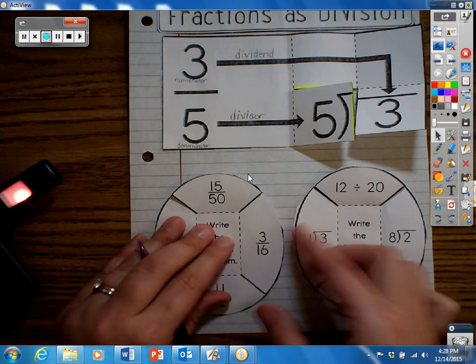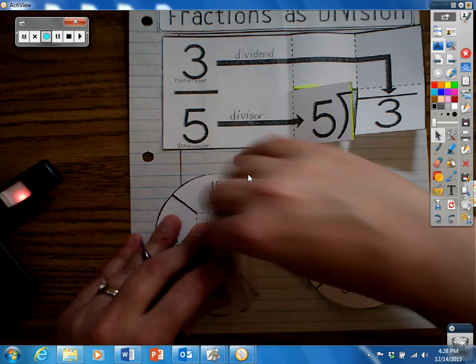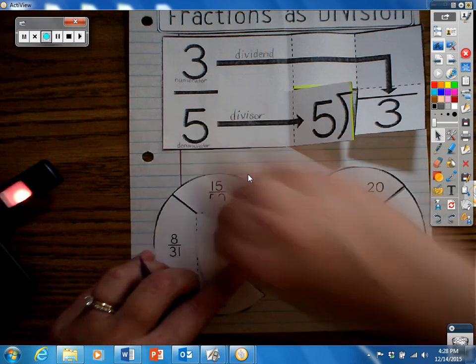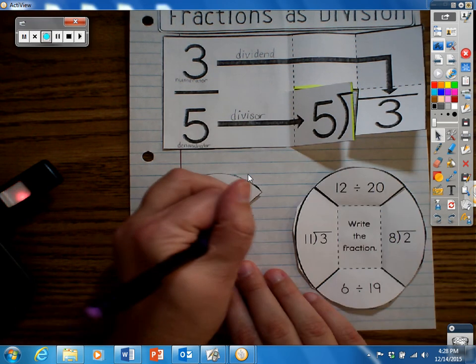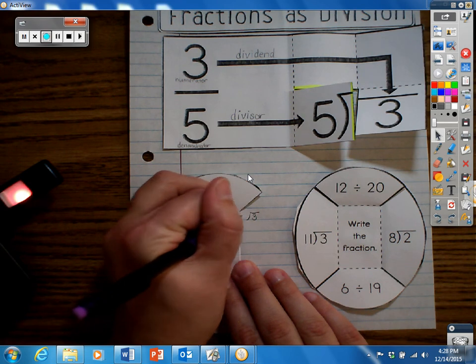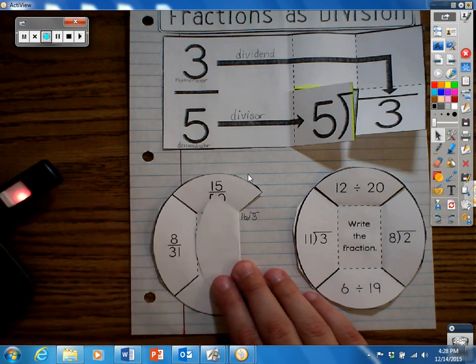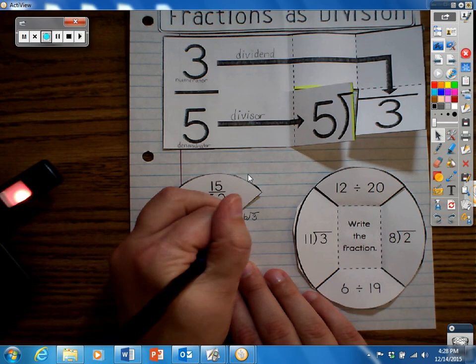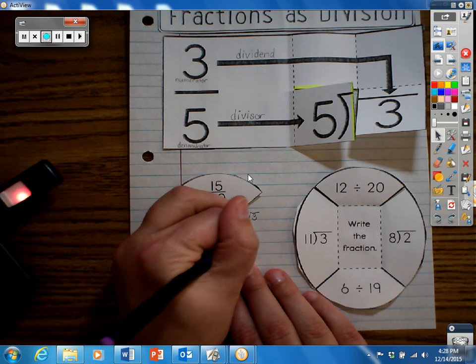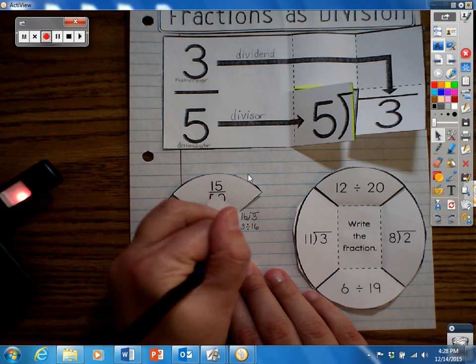And then we'll go to 3 sixteenths. Again, the numerator goes on the inside and the denominator goes on the outside of the division problem. 3 divided by 16, and in word form.